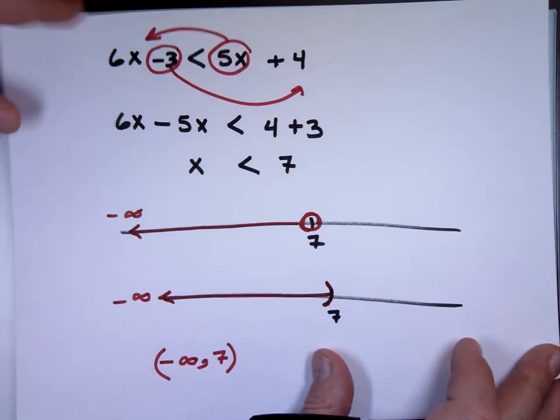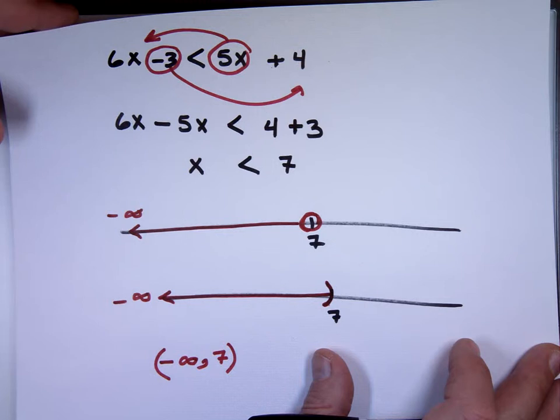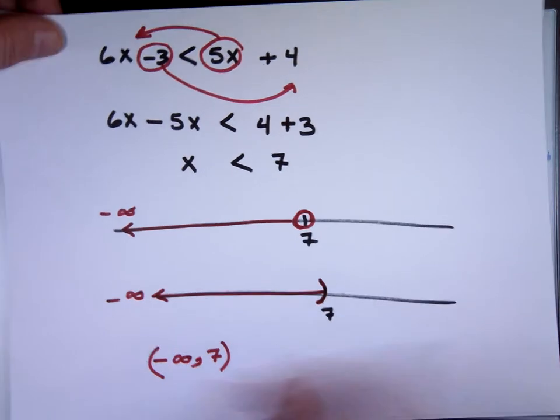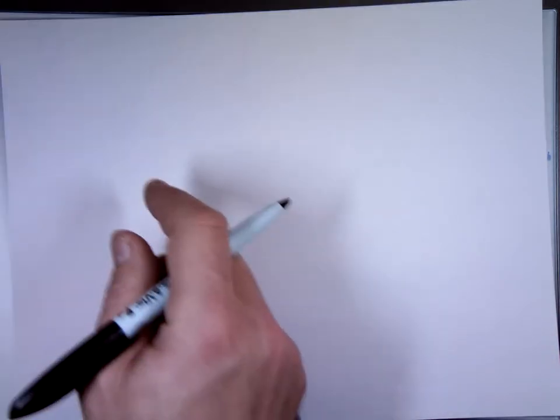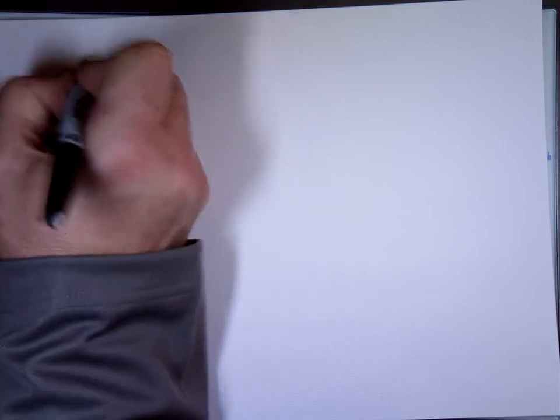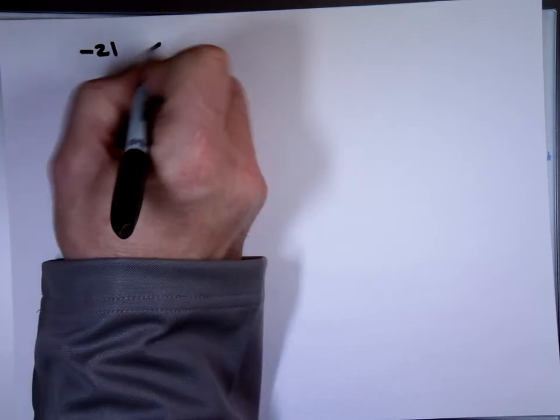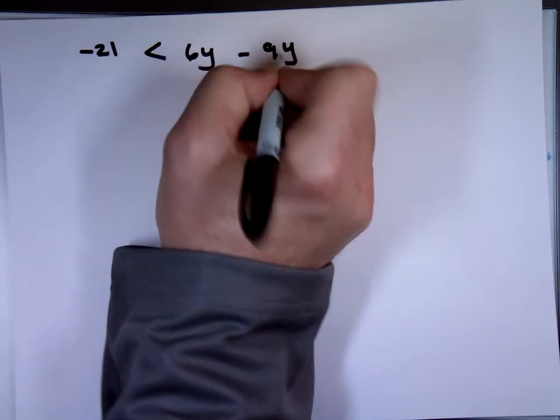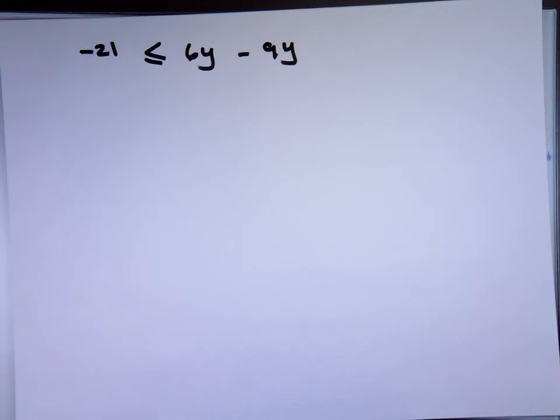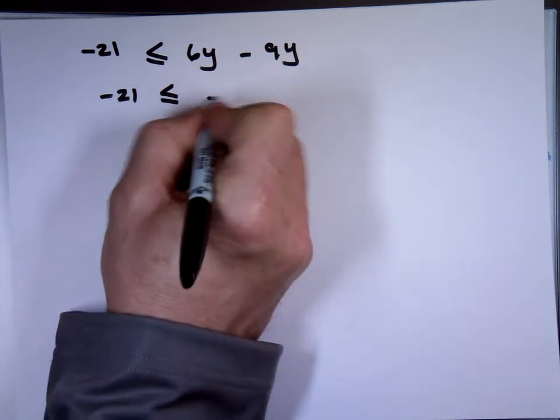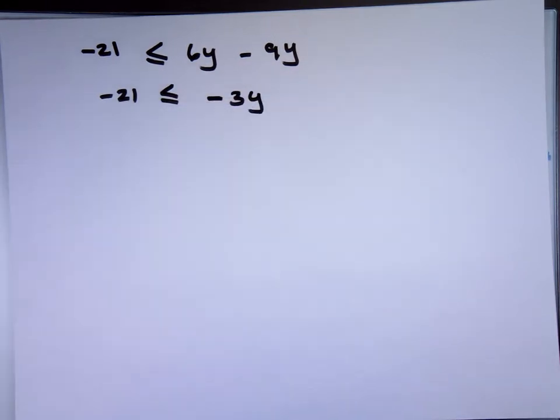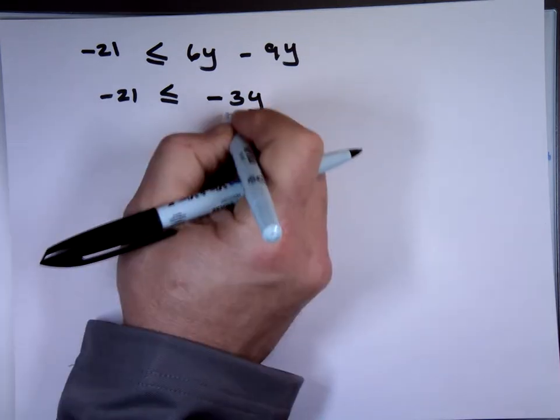The only time we have to do a twist to it, the only time, is we treat this different than like an equal sign when this value is negative. So, like I'll give you an example. Negative 21 less than 6y minus 9y. I'll make it less than or equal to so you get to see what we do with that. Negative 21 less than or equal to, what is 6y minus 9y? Negative 3y. Now, to solve for y, what do we do? Divide by 3. Divide by? Negative. Negative 3.